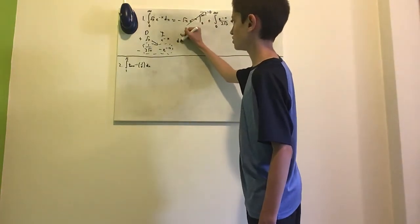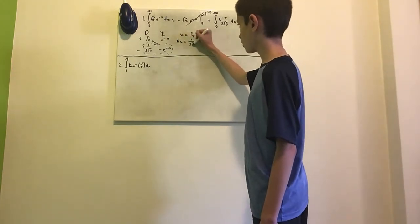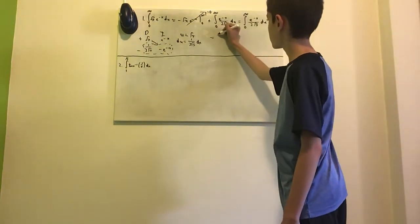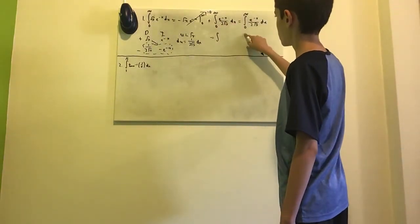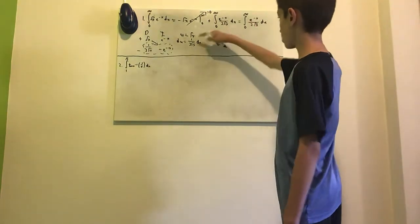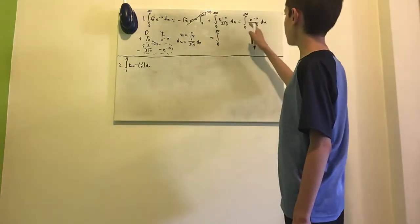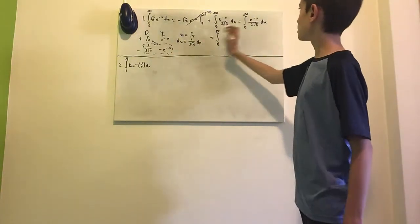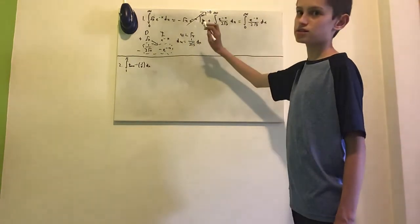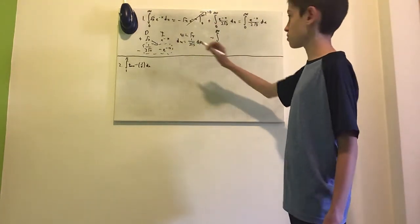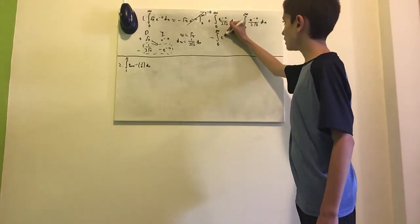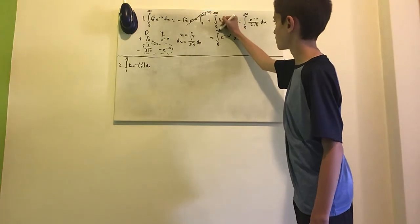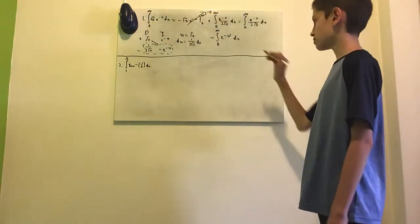We introduce a substitution: let u equal the square root of x, which means du equals 1 over 2 square root of x dx. The bounds go from 0 to infinity, and the 1 over 2√x dx part vanishes. Since u is the square root of x, x equals u squared, so we have the integral from 0 to infinity of e to the negative u squared du.